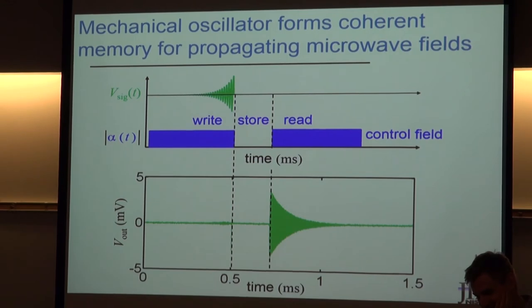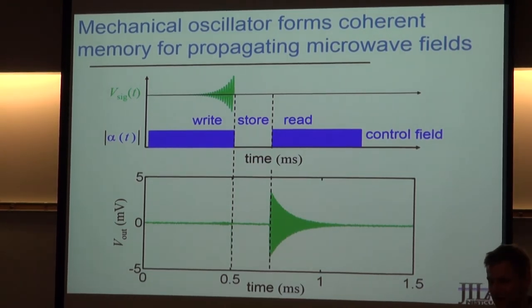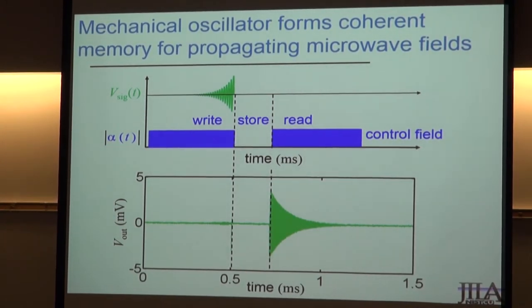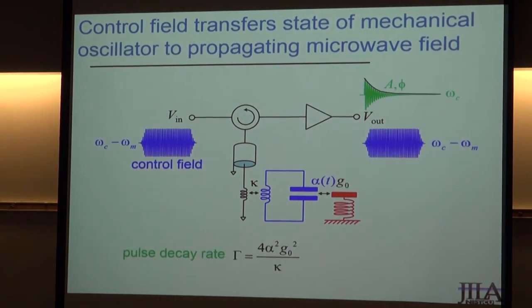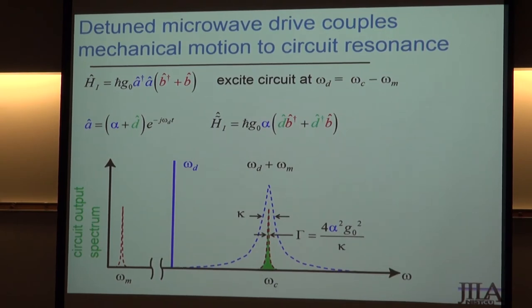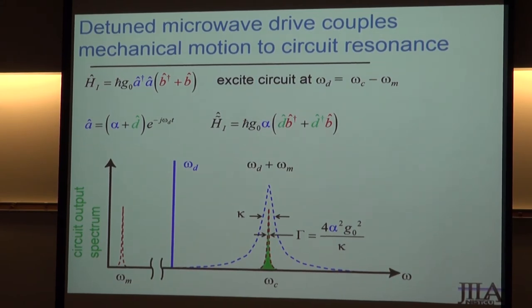The signal that goes in is at the microwave frequency, detuned from the control field by the mechanical oscillator's resonance frequency. The control field is also a sensing and measuring field — it reads out the state of the mechanics at the same time it controls it. Nothing happens to the mechanical motion unless the control field is on. The mechanical motion and the energy in the electrical circuit are, to a fantastic approximation, completely decoupled when the control field is turned off.